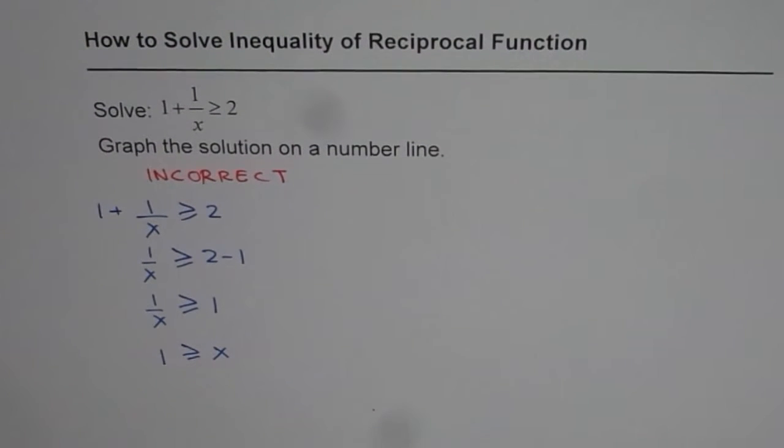So we get a solution here and the solution is that x is less than or equal to 1. So that is the solution which we get and we can actually write down this solution or show it on a graph also. Let us say this is our number line and here we have 0. We are saying that x is less than or equal to 1. So let us say this is 1 it is included and that is the solution set.